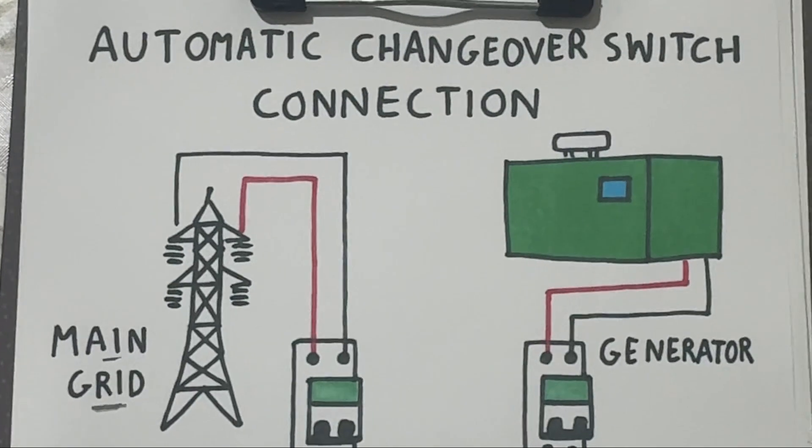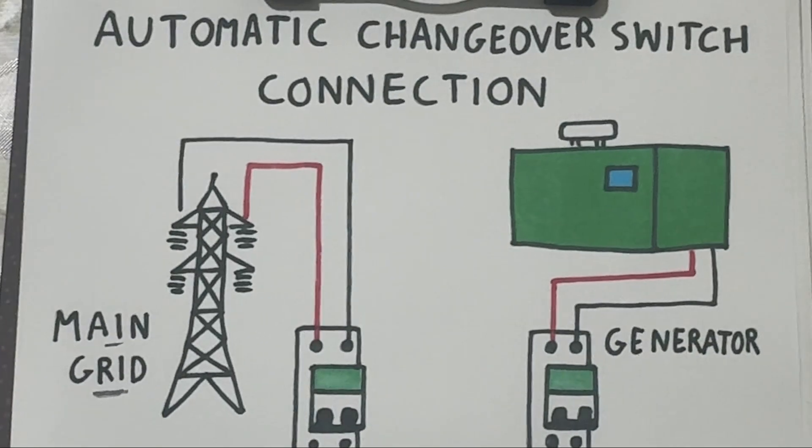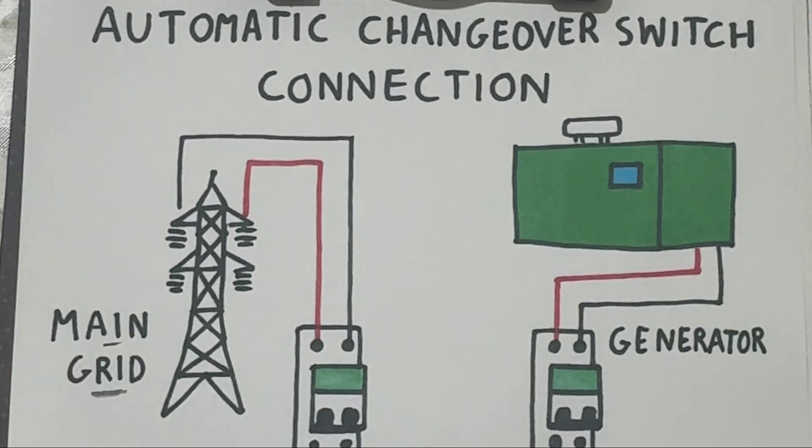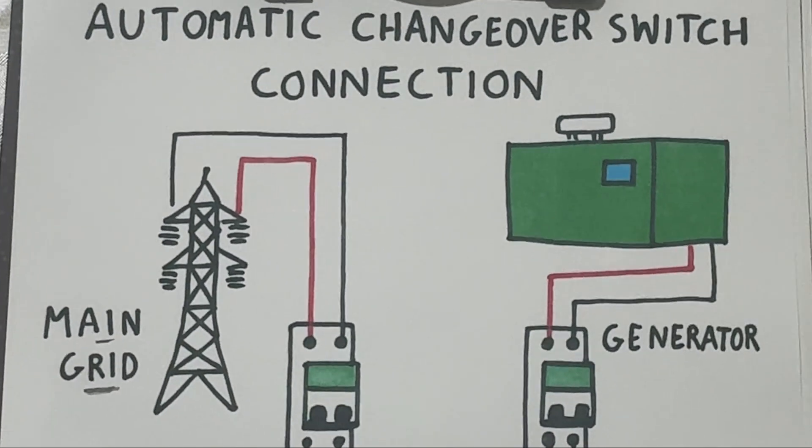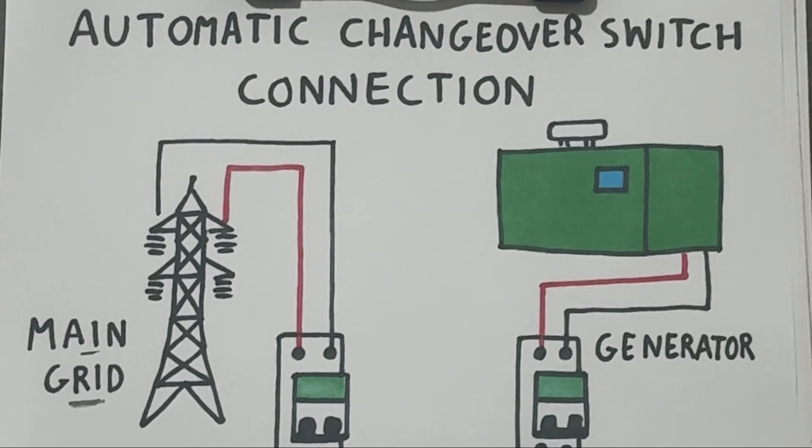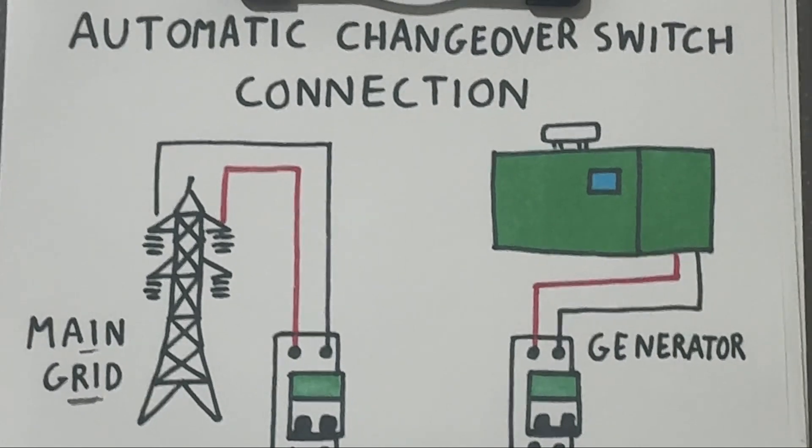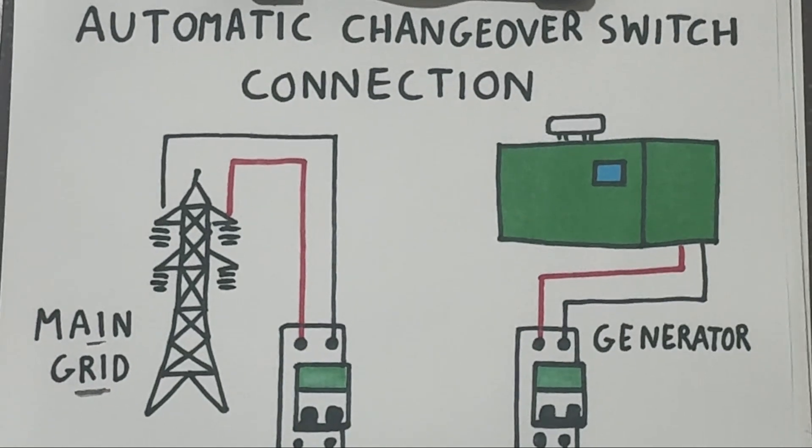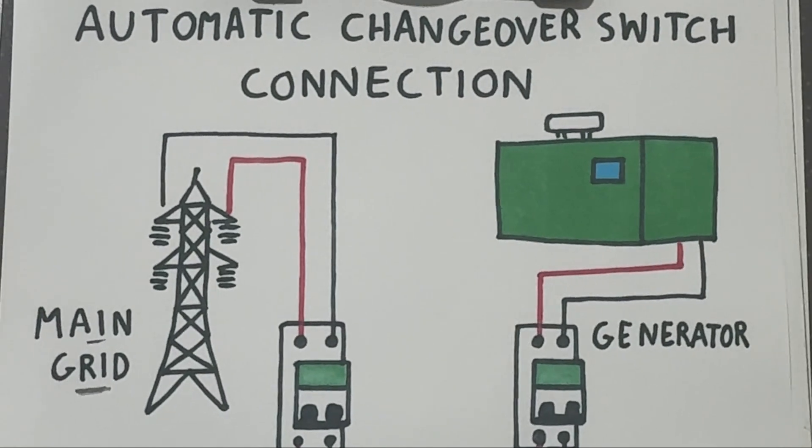Hi everyone, in this video we are going to understand how an automatic changeover switch or ATS works. The system that automatically switches your electrical load between main power and the generator power whenever there's a power outage. Let's go step by step.